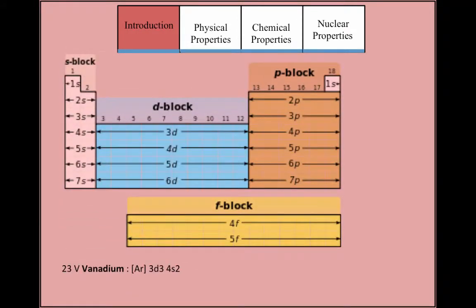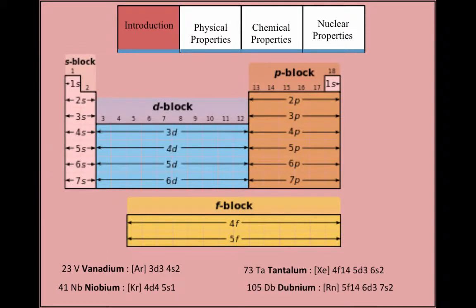The transition metals of group 5B consist of vanadium, niobium, tantalum, and dubnium. The electron configurations of each element range from 3D to 6D subshells and have electron configurations as shown below.